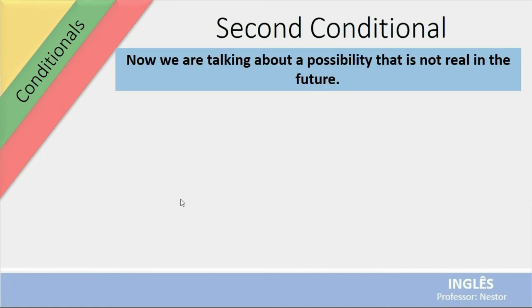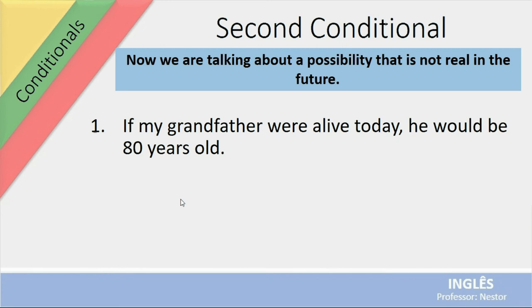Vamos dar uma olhadinha nos exemplos. Now we are talking about a possibility that's not real in the future. Então, não é uma possibilidade real. É uma possibilidade hypothetical. Vamos ver the examples. If my grandfather were alive today, he would be 80 years old. Olha, se meu avô tivesse vivo hoje, ele faria 80 anos. Ele vai fazer 80 anos? Não, porque ele não tá vivo. Mas se ele tivesse vivo, essa condição seria, sim, atingida. Então, this is the idea of the second conditional.